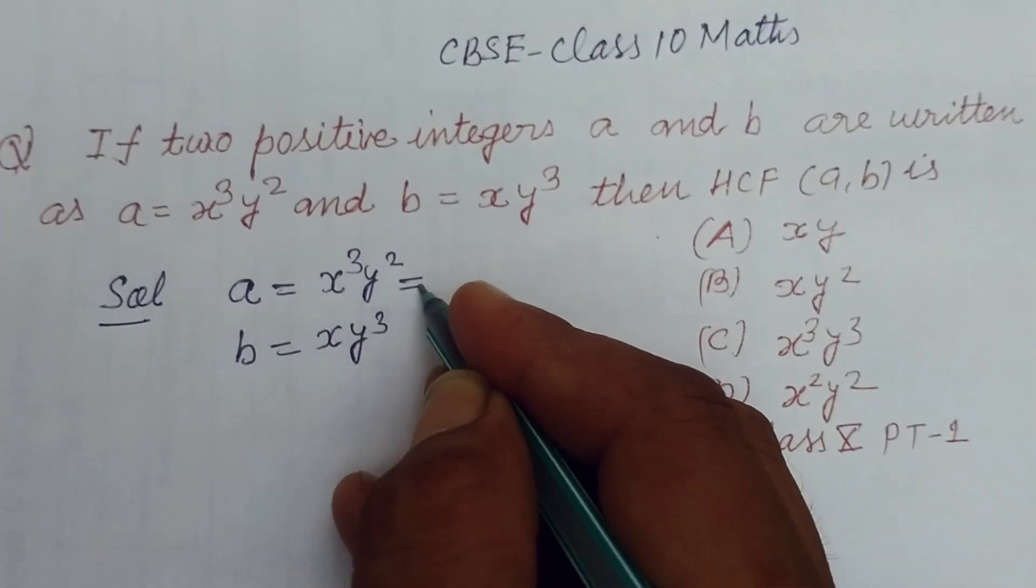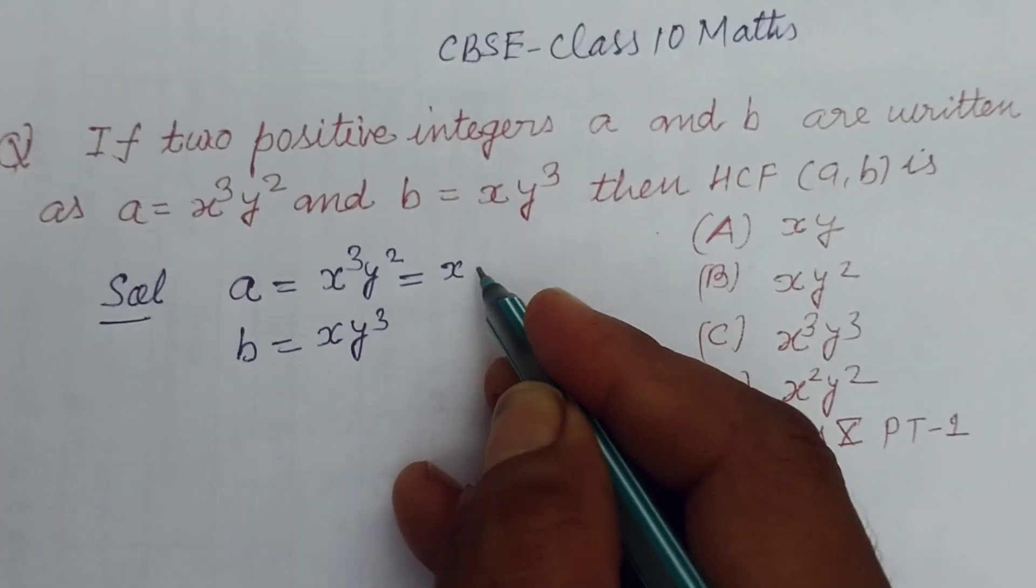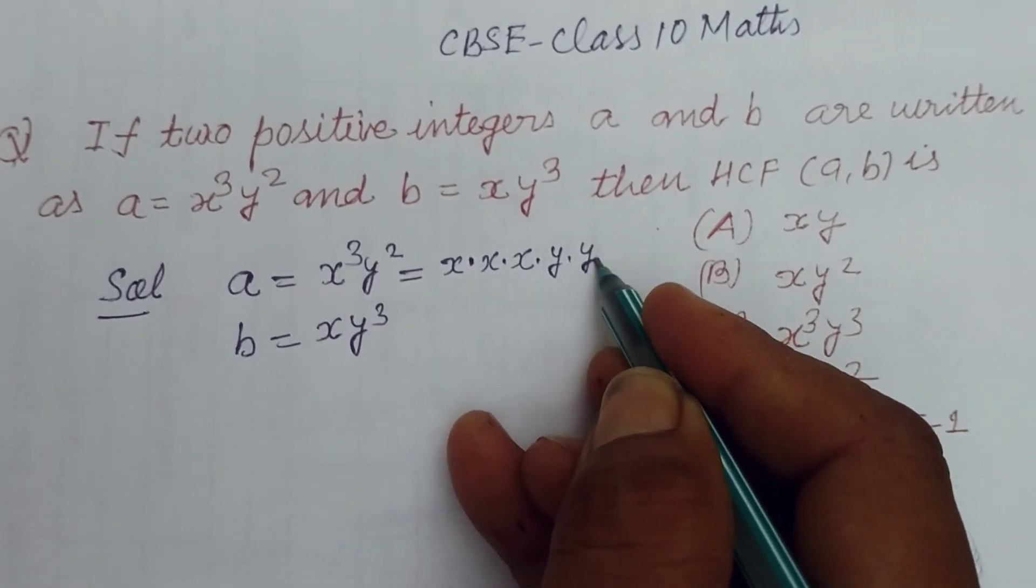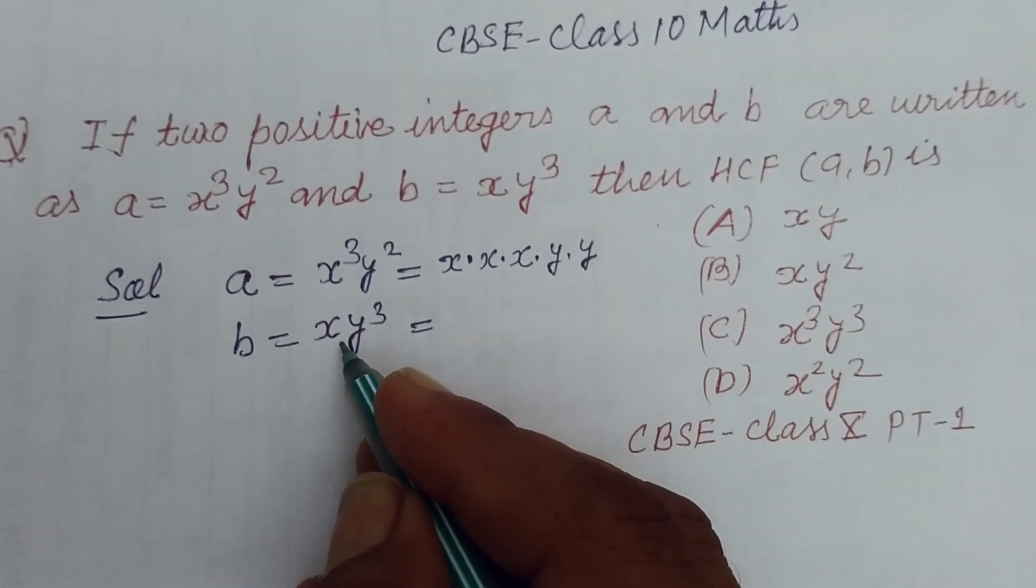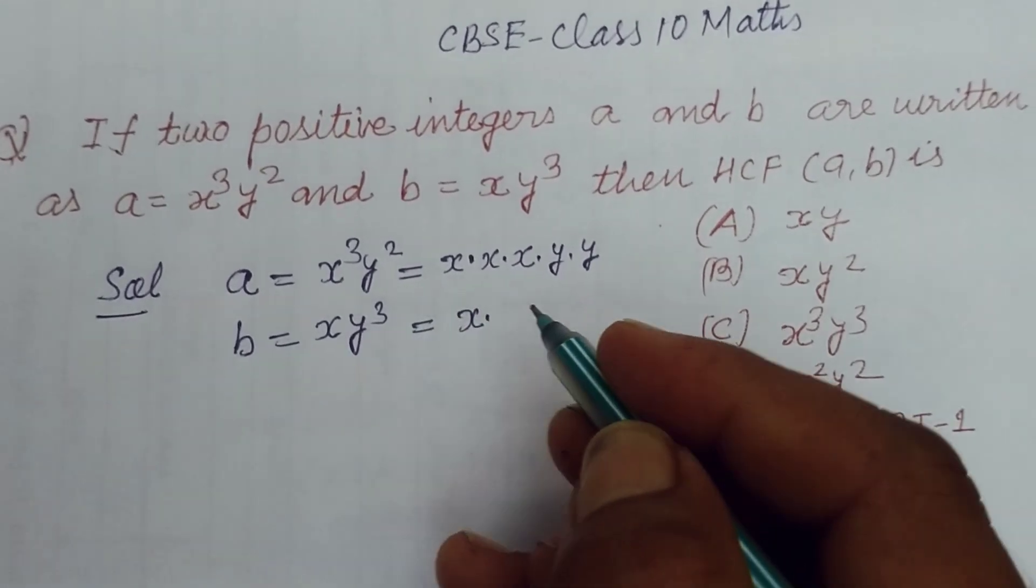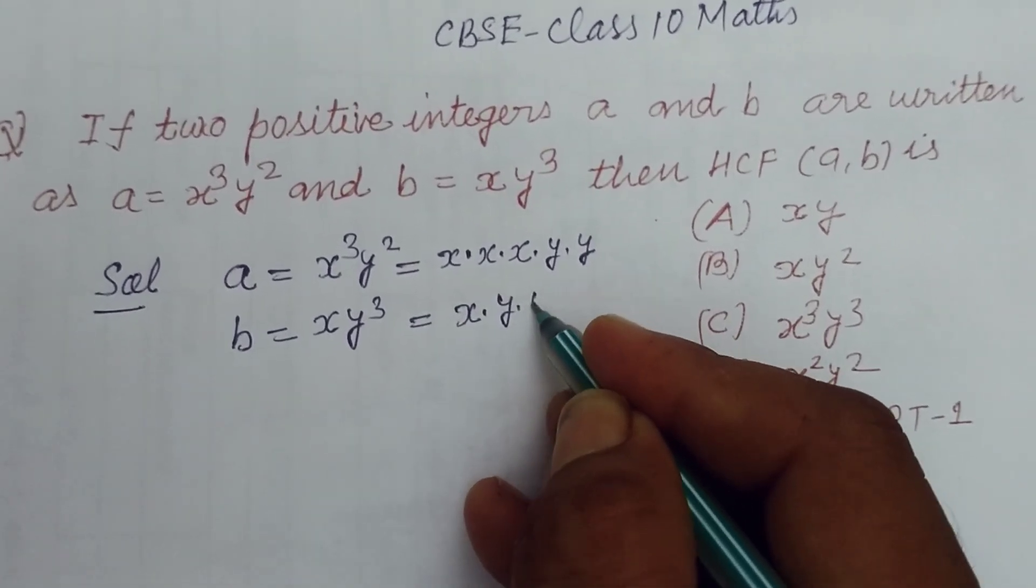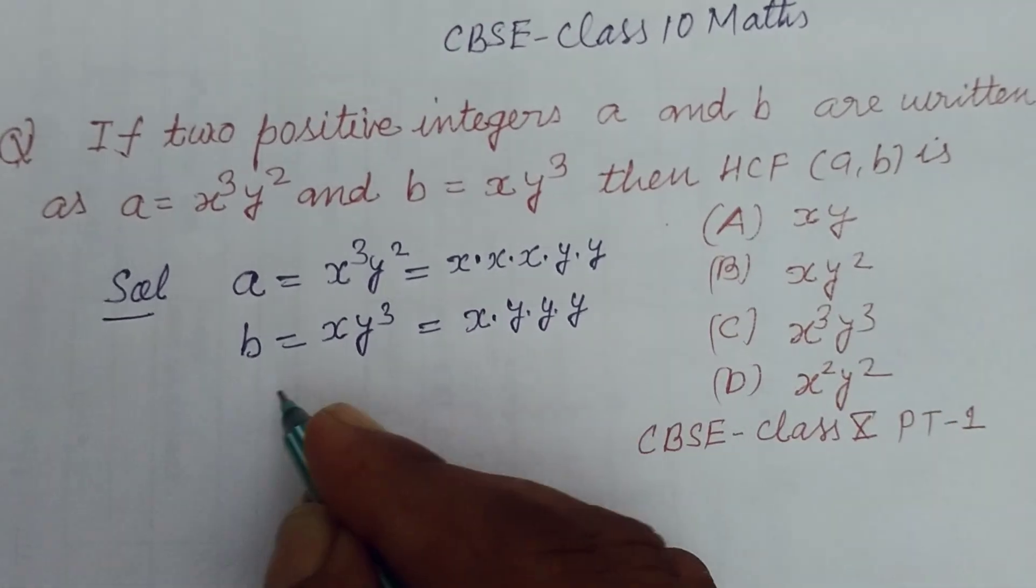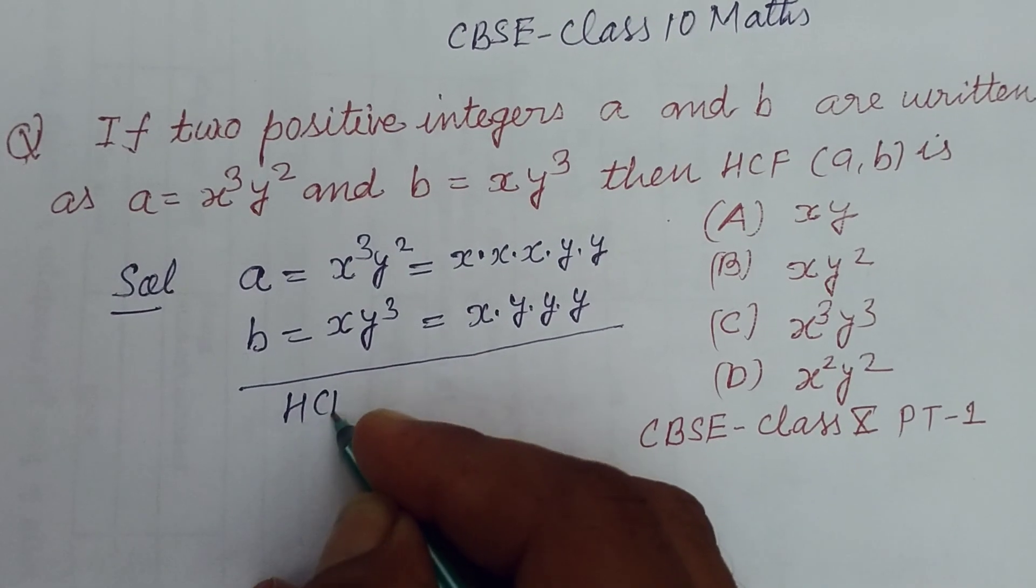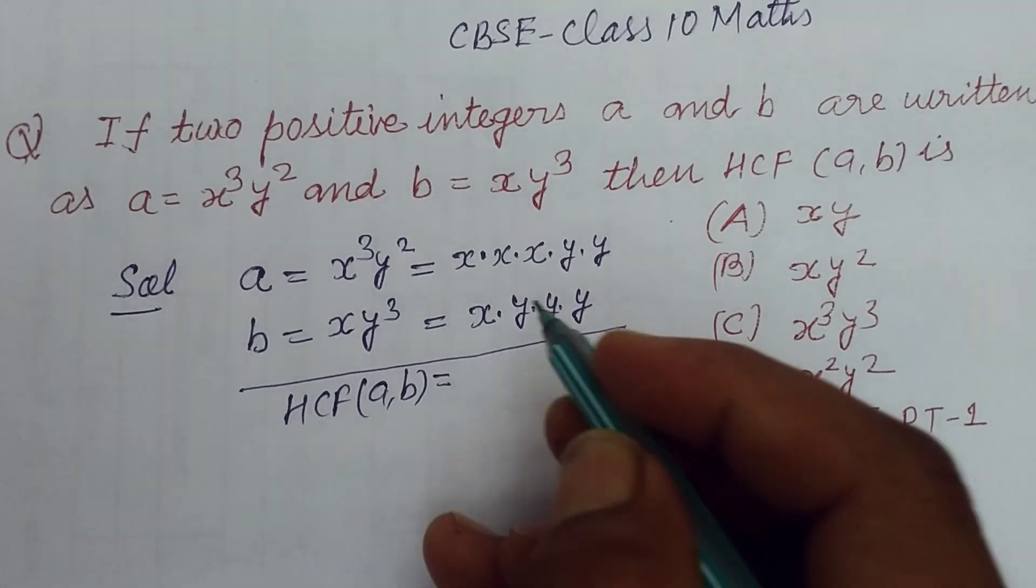Now we factorize these. So a = x³y² = x×x×x×y×y. And b = xy³ = x×y×y×y. Now we find the HCF of a and b.